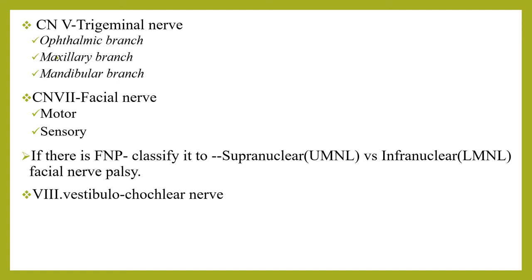Cranial nerve eight is the vestibulocochlear nerve, with two divisions: the cochlear branch, used for hearing, and the vestibular branch, used for equilibrium and balance of the body.